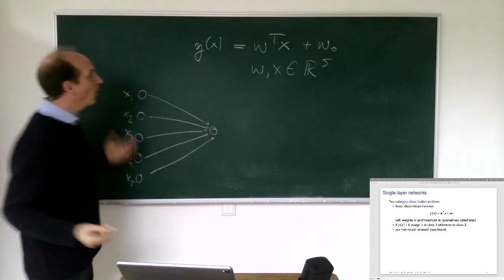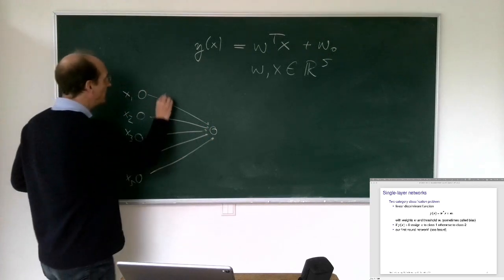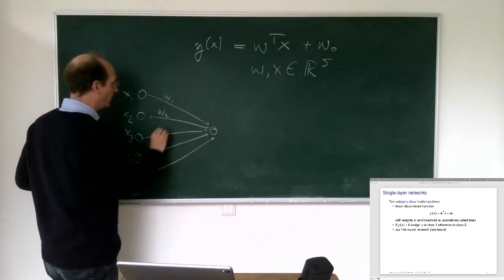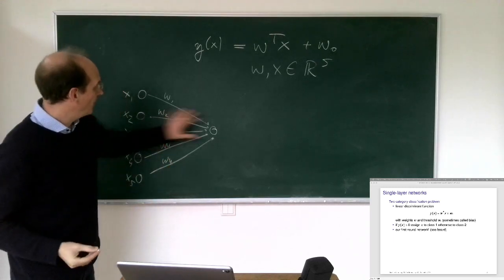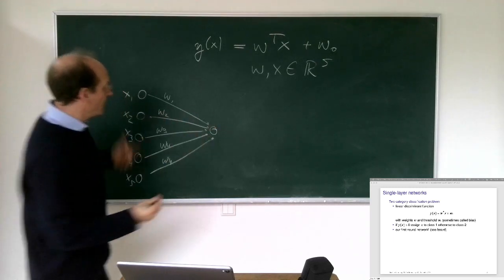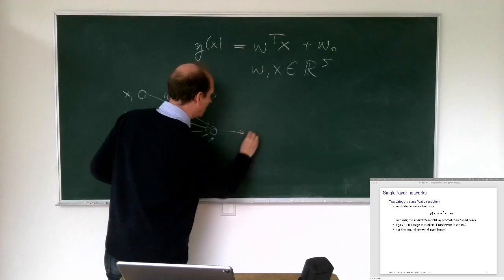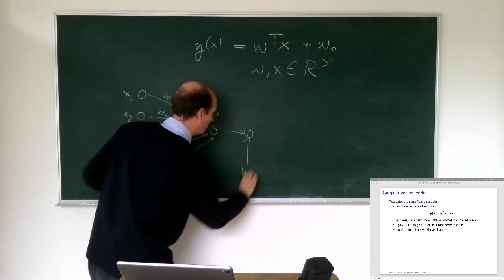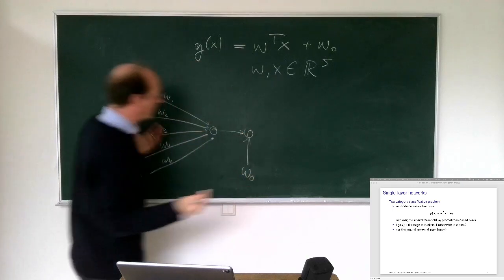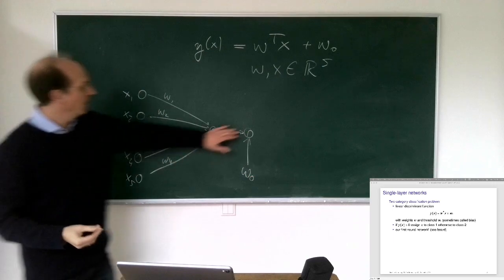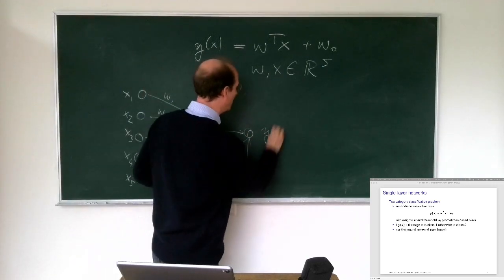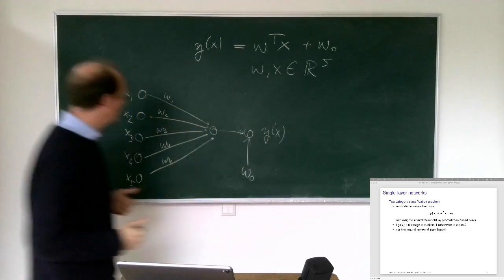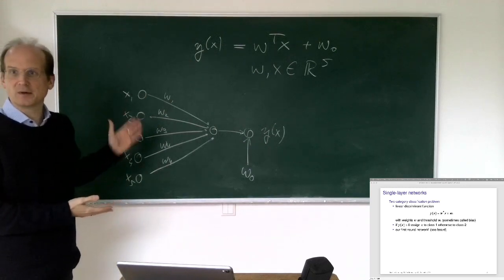The next operation is adding a bias W zero, and then this will be our output Y of X. So this is our first neural network. What we did is simply write out the computation as a graph, and the computation flows along the graph.